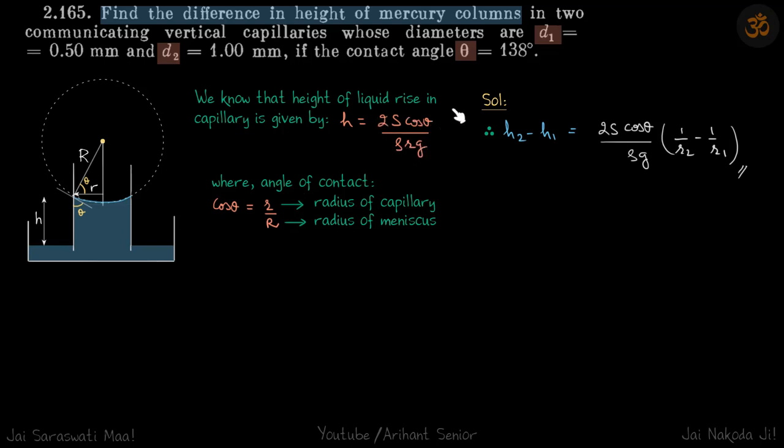You can see what each of this represents here. h is the height rise in the capillary, cos θ is this angle. This is the contact angle between the surface of the glass and the surface of the liquid. If this angle is θ, this is 90 minus θ, so this is also θ. From here you can see cos θ is small r by capital R.